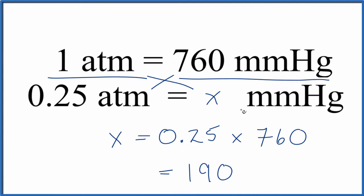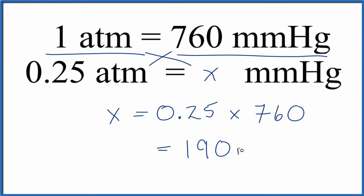And the units for that, that's the millimeters of mercury since we found X. So that's the first way you could figure out how many millimeters of mercury are equal to 0.25 atmospheres.